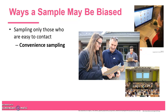If you sample only those who are easy to contact, that's a biased sample — it's called convenience sampling. It's a quite common technique. Some examples include having people agree to participate in an online poll or fill out a review for a restaurant on Yelp.